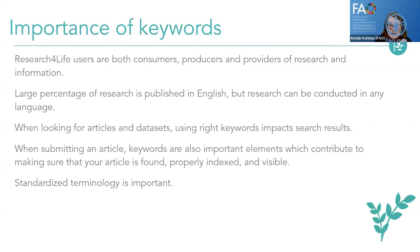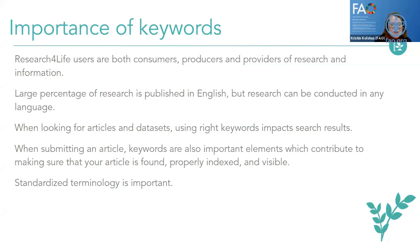Those of you who are librarians, please feel free to add comments in the chat. We know that information is there, but finding the right, coherent, up-to-date information — keywords make a difference. Also, if you are publishing articles, the journal will usually ask you to submit keywords. How do you know what the right keywords are to include? This is why AgriVoc can be a useful tool. Using the right keywords will help make sure that your articles are findable, visible, indexable, and accessible to people.